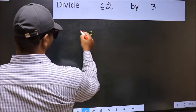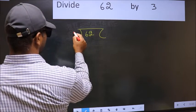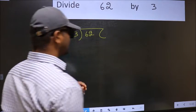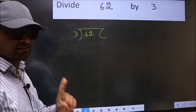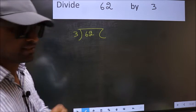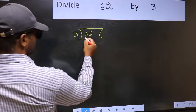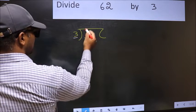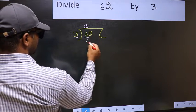62, 3 here. This is your step 1. Next, here we have 6 and here 3. When do we get 6 in the 3 table? 3 times 2 is 6.